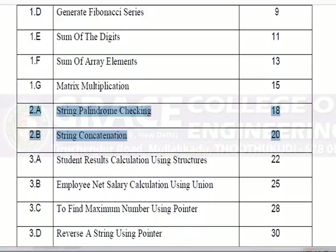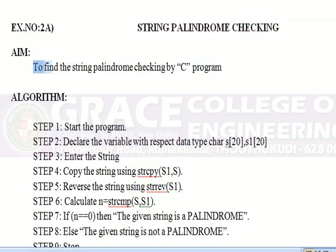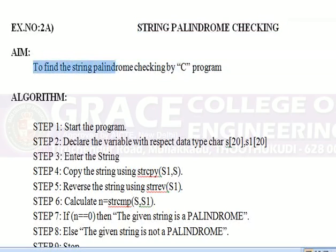2nd exercise, we have 2 subdivisions A and B. Subdivision A: String Palindrome Checking. The aim of this program is to find the string palindrome checking by C program.